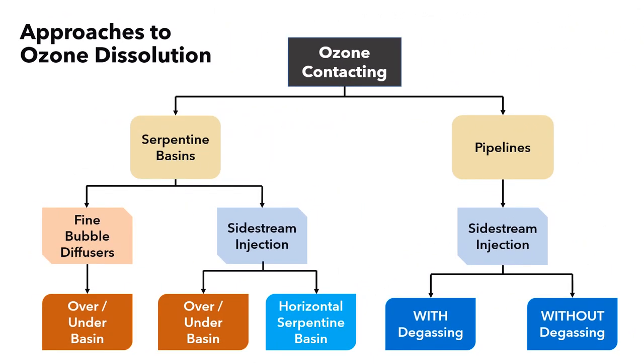Let's start with some of the basics. Ozone contacting for municipal water treatment is conducted in serpentine basins, which can be vertical serpentine or horizontal serpentine, or in pipelines. The two main methods of ozone dissolution are fine bubble diffusion and side stream injection in basins and pipelines with or without additional mixing equipment. This can be done with degassing or without degassing as well.